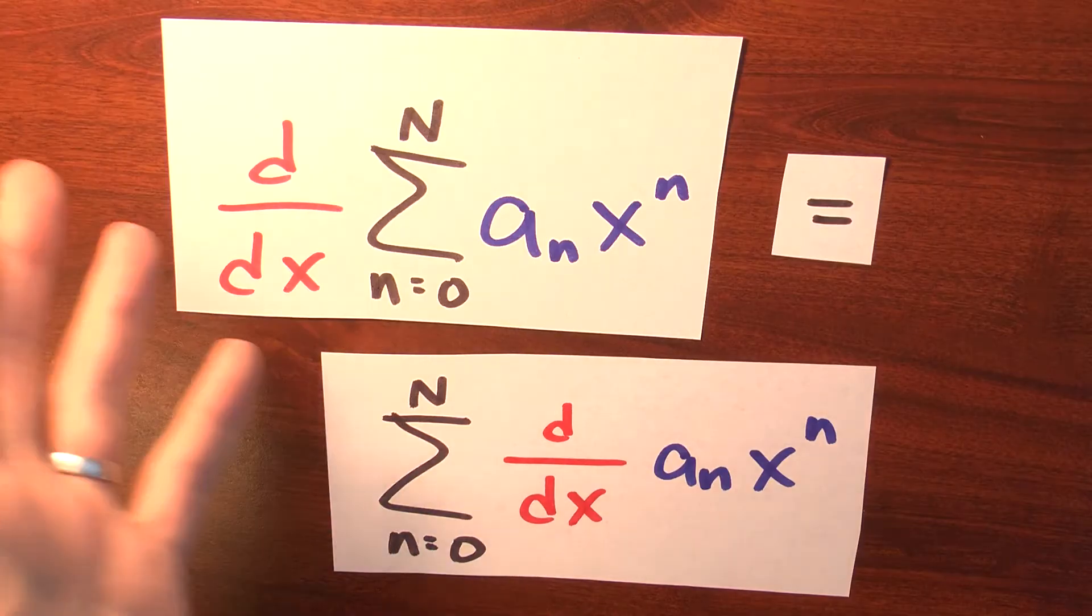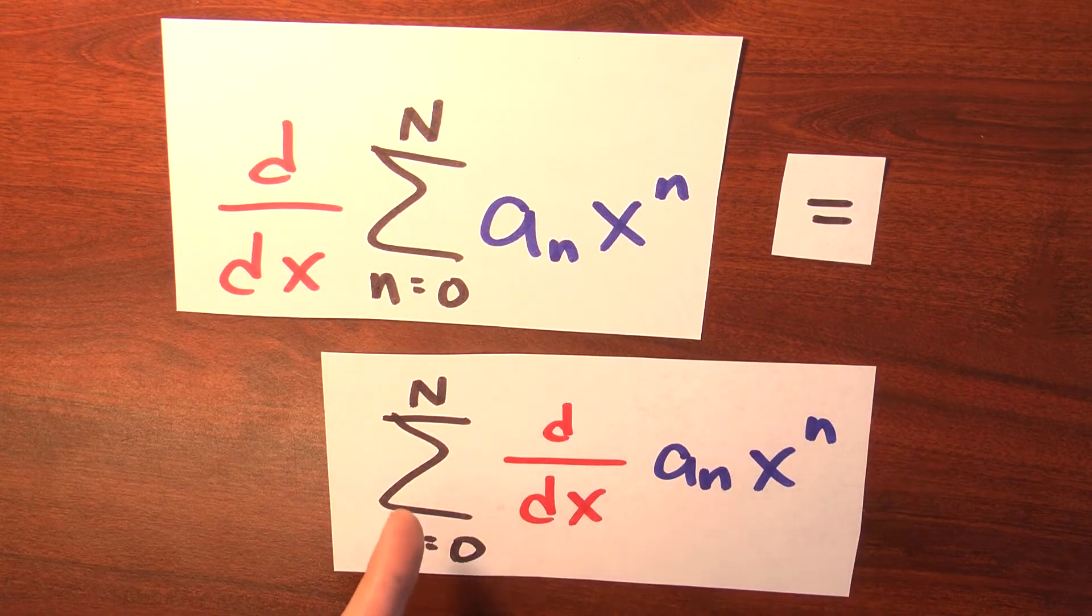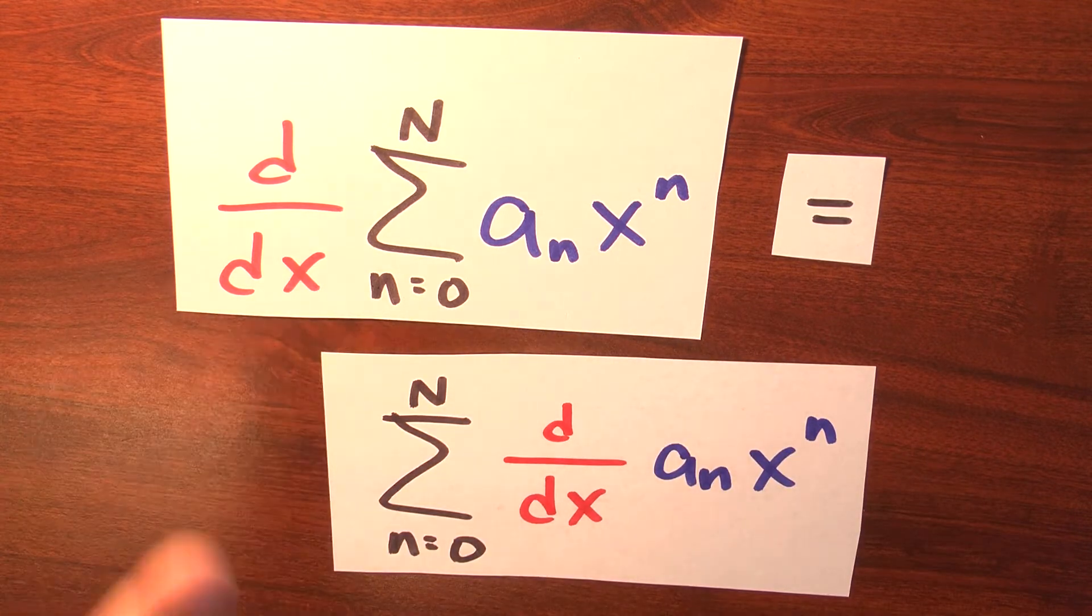At this point, you might be wondering why I'm even calling this a theorem. I mean, what's the big deal? You might be thinking or remembering that the derivative of the sum is the sum of the derivatives. So what's the big deal? I mean, isn't this something that we already know?